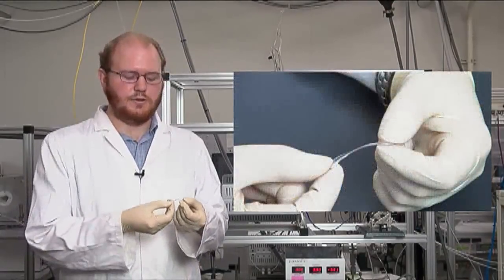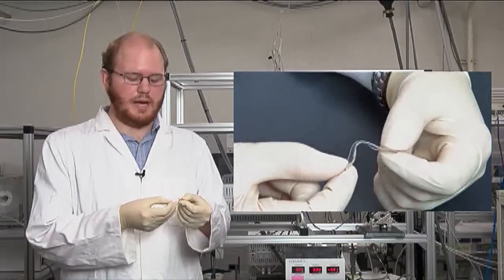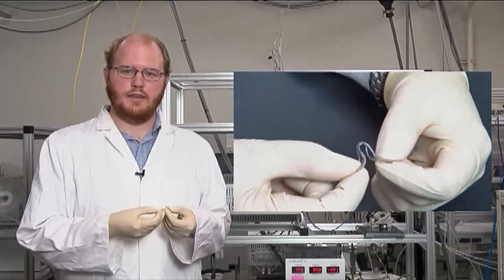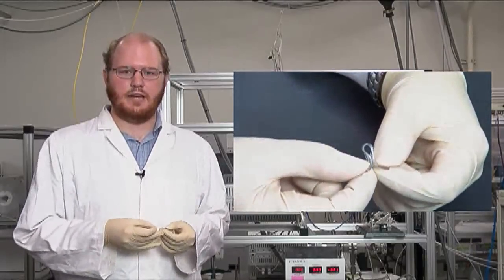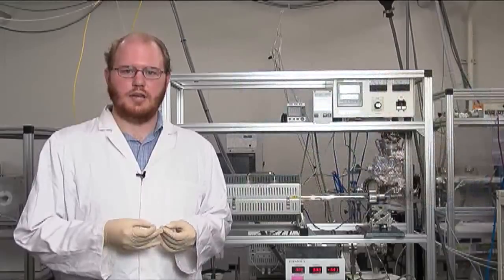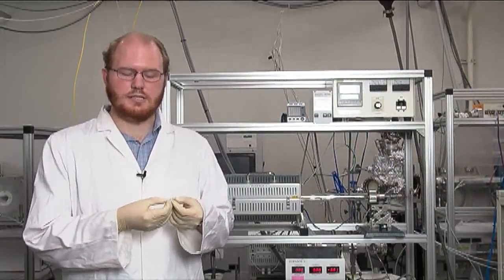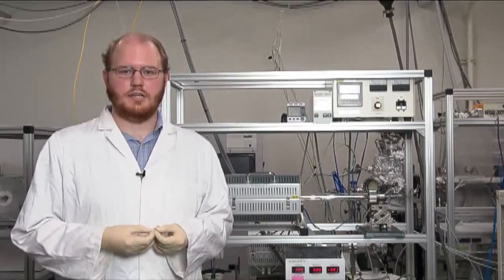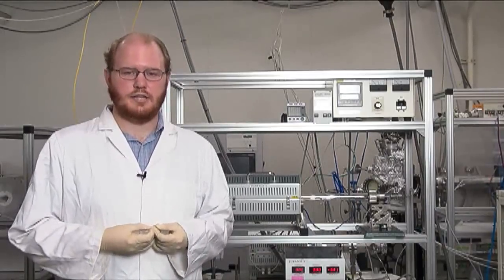By transferring graphene onto a flexible substrate, such as this PDMS rubber, we can investigate the effect of strain, both on the graphene lattice and the electronic structure. Transparent flexible electrodes, such as this, are necessary for applications such as flexible displays and touchscreens.